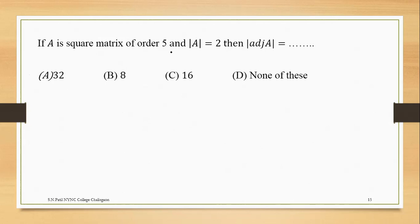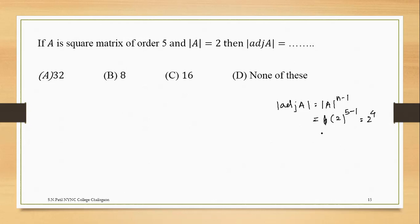If A is a square matrix of order 5 and determinant of A is 2, then what is the determinant of adjoint of A? We know the theorem: if the order of A is n, then determinant of adjoint of A equals determinant raised to n minus 1. Here the order is 5 and determinant is 2, so it is 2 raised to 5 minus 1, that is 2 raised to 4, which equals 16. The correct answer is 16.